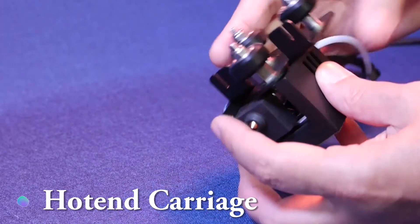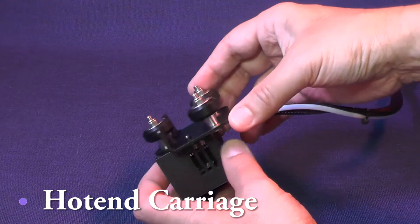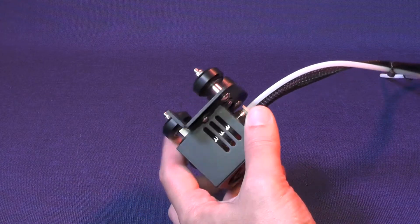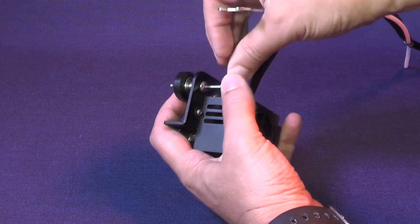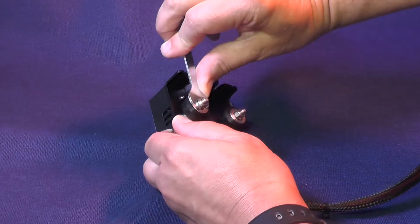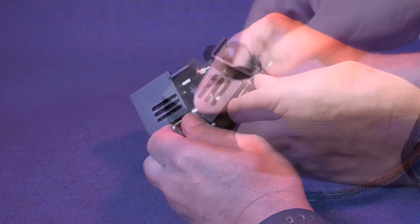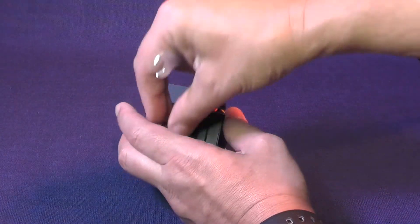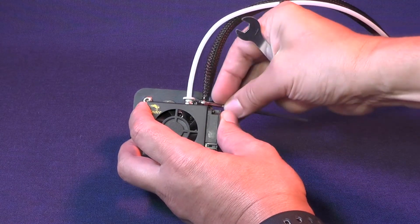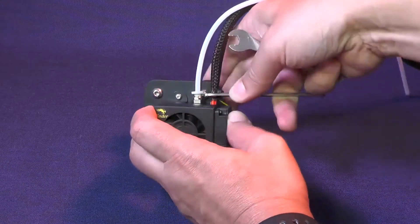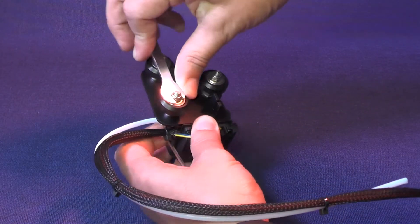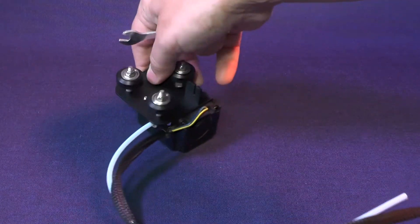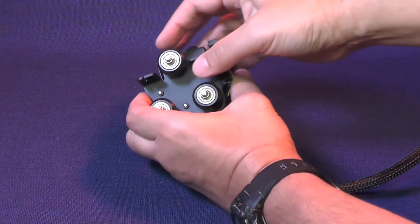Next, we are going to work on the hot-end carriage. And, here, as usual, we are going to tighten the screws for the two wheels that don't have the eccentric nut. The screw head for the second wheel is a little harder to access, but nothing that cannot be resolved with a little bit of patience. Now, it's time to do the adjustment for the eccentric nut.